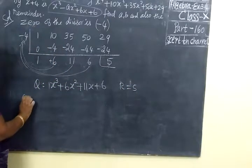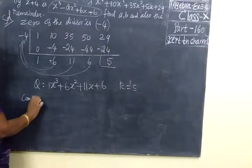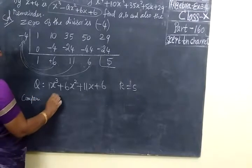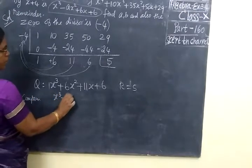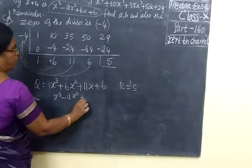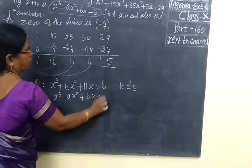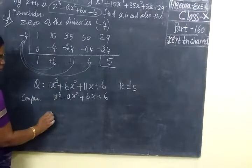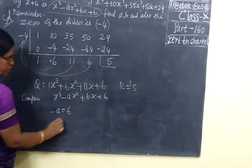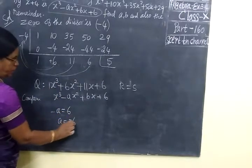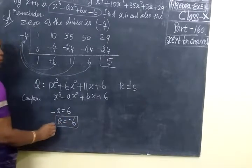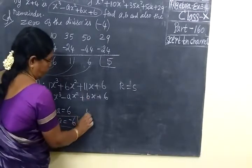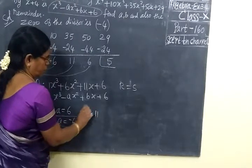Now we compare. The question is X³ - AX² + BX + 6. Comparing this with X³ + 6X² + 11X + 6, we see that -A equals 6, so A equals -6. We got one answer. In the same way, B equals 11.